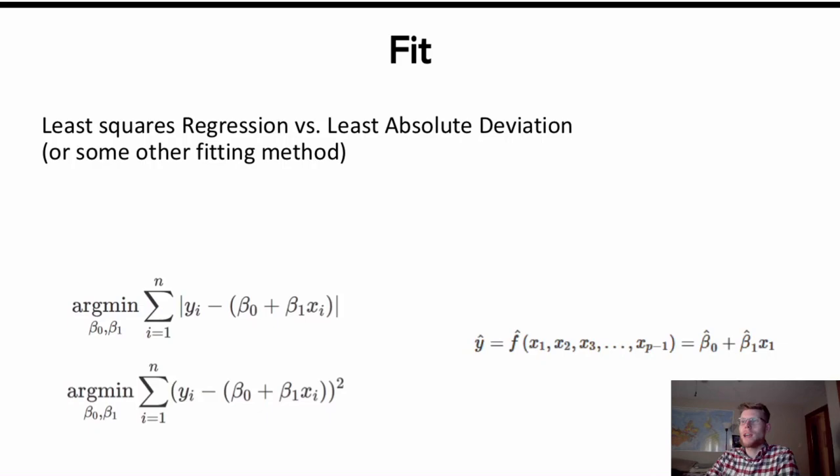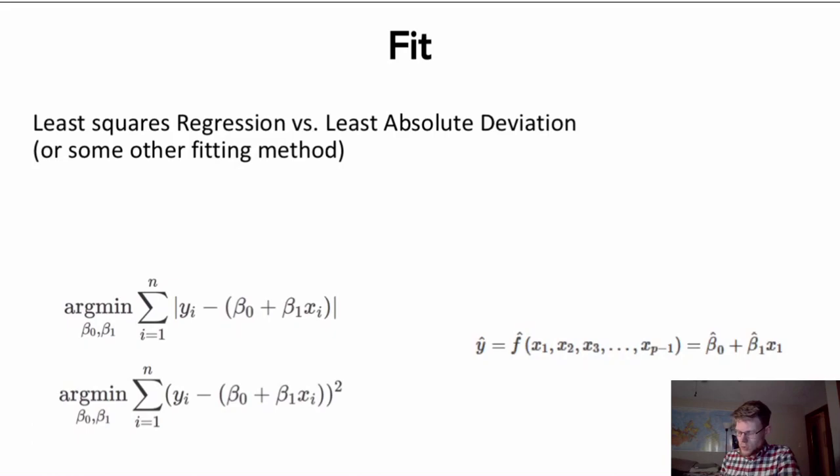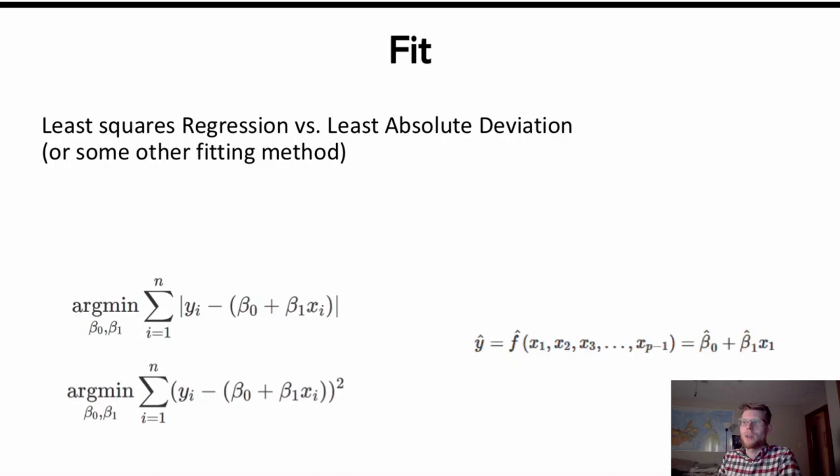And then lastly, fit. We've already discussed this as much as we need to. We're pretty much always using a least squares method approach to fitting our model. We don't have to. There's other ways that you could fit a model without using least squares. A common method would be this least absolute deviation method here. So this idea that instead of taking the squared deviations or squared residuals, we take the absolute residuals, add them up, and find the parameters that minimize that.